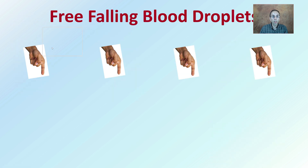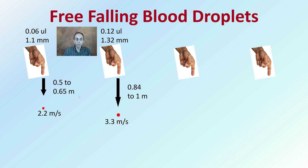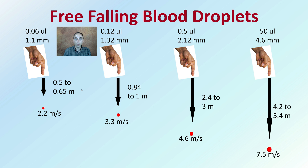Free-falling droplets — as the name implies, this occurs just because of the force of gravity. We have measurements of 0.6 microliters and 1.1 millimeters diameter. We see the distance and speed comparisons, as well as how far they may fall in meters per second and the distance they may travel. This covers the different aspects that will occur with free-falling drops.